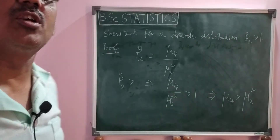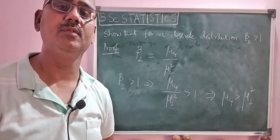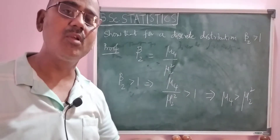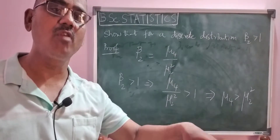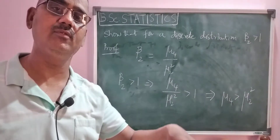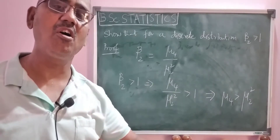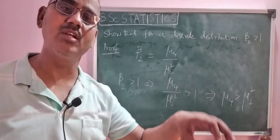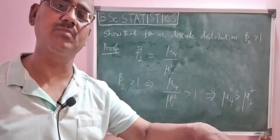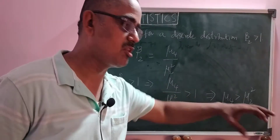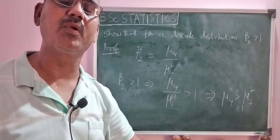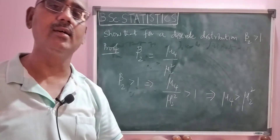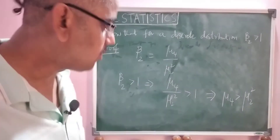Now I write the formulas for a discrete distribution. The formula will be the usual summation formula. The formula of mu 4 and mu 2 will be in summation form: 1 by N, summation i equals 1 to n, of f_i into (x_i minus x-bar) whole power 4. Mu 2 uses whole square and mu 4 uses whole power 4, because these are the second and fourth moments about the mean.